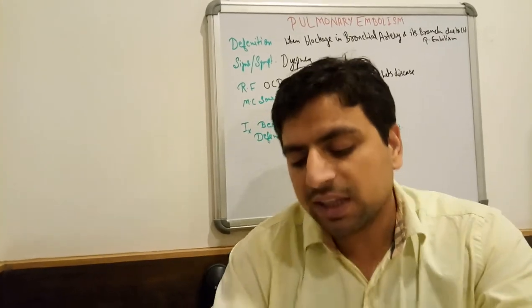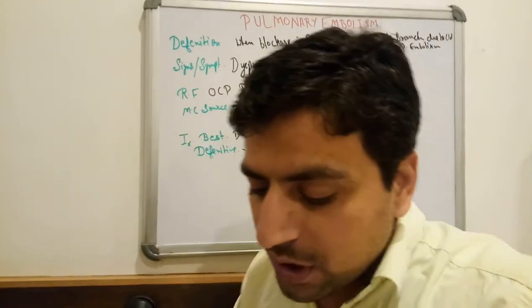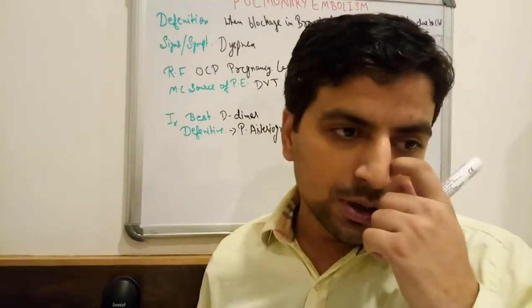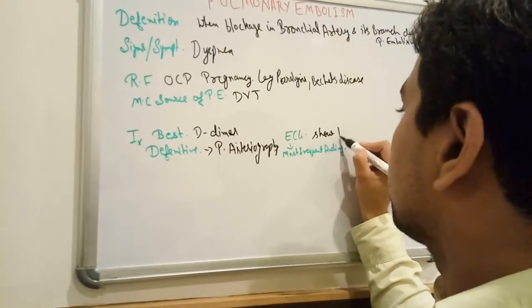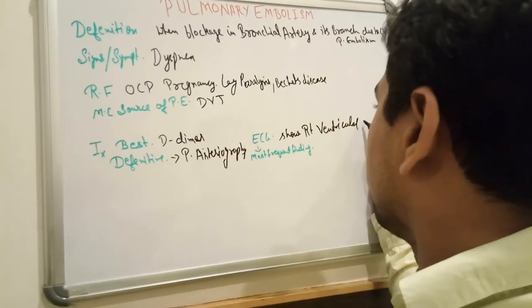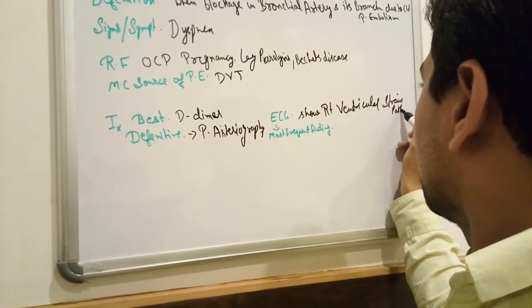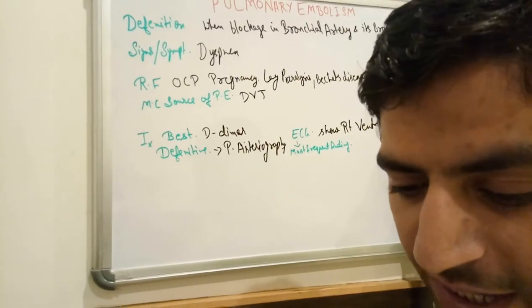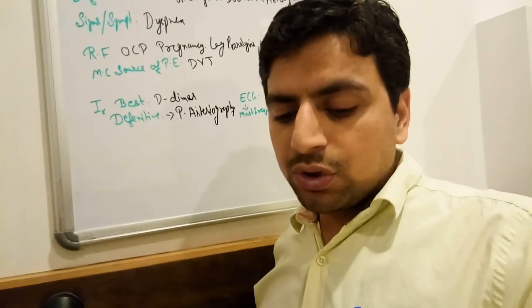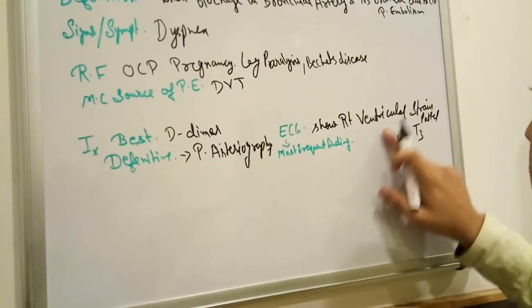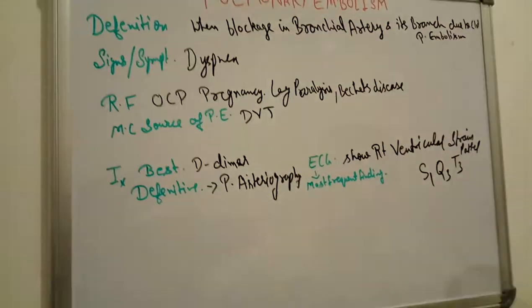True about pulmonary embolism: option A — ECG shows right ventricular strain pattern; option B — difference in normal partial pressure of oxygen; option C — ECG also shows typical S1, Q3, T3 pattern; option D — it is not a medical emergency. The correct answers are A and C. ECG shows right ventricular strain pattern and also shows S1, Q3, T3 presentation.